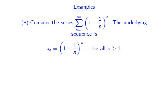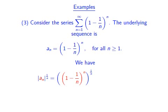In the last example we consider the series over the sequence (1 - 1/n)^n, for n greater or equal to 1. We look at |a_n|^(1/n). The two powers n and 1/n cancel each other out and we are left with 1 - 1/n. As n tends to infinity, 1/n tends to 0, and overall we get a limit of 1.